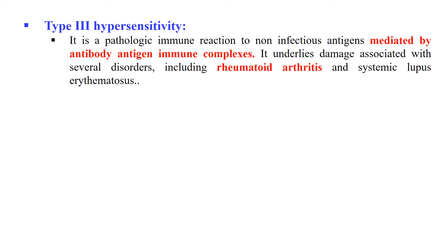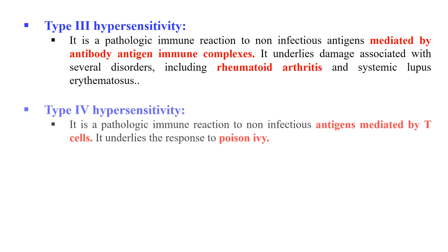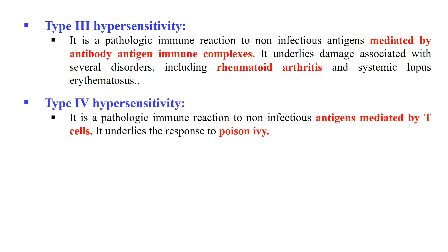Type 3 hypersensitivity is due to the antibody-antigen immune complex, and an example is rheumatoid arthritis. Type 4 hypersensitivity involves T cells, and an example is poison ivy.